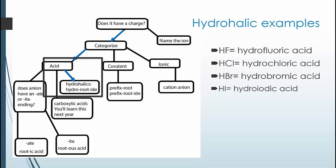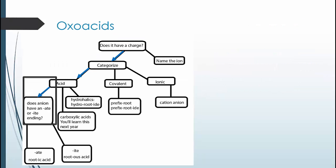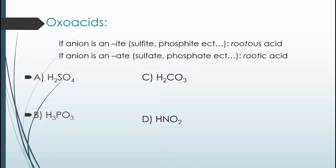This is pretty much all there is to say about the hydrohalics. Now let's move on to the oxoacids. Oxoacids come from the appropriate number of hydrogens bonded to one of the polyatomic ions discussed in the previous videos. These have a common structure of the central element's base with a change in the ending of either "-ous" or "-ic." If the polyatomic ion has an "-ate" ending, then the acid has the "-ic" ending. If the anion has an "-ite" ending, then when it is turned into an acid, it has an "-ous" ending. Finally, we add the word "acid" to the end.